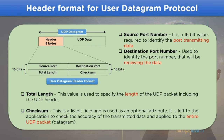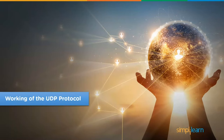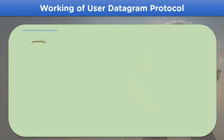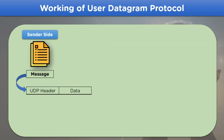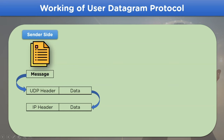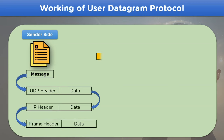Now let's move on to the working of the UDP protocol. To begin with, data from the sender side is enclosed with the UDP header for communication. The next step is to hand over this data to the IP section for encapsulation with the IP header, combined with the UDP header and data part.